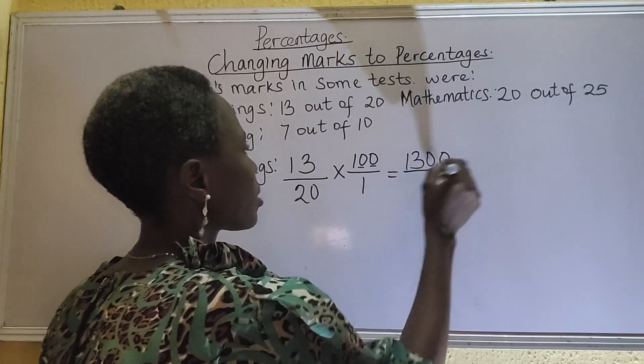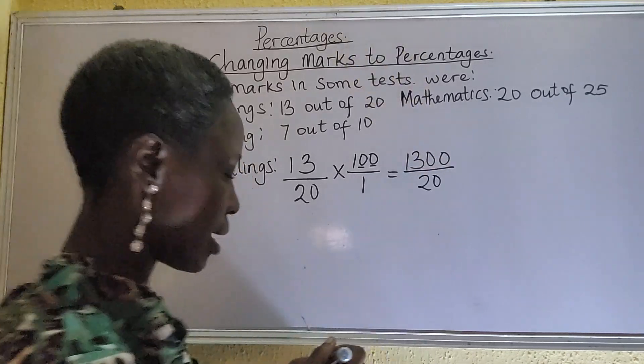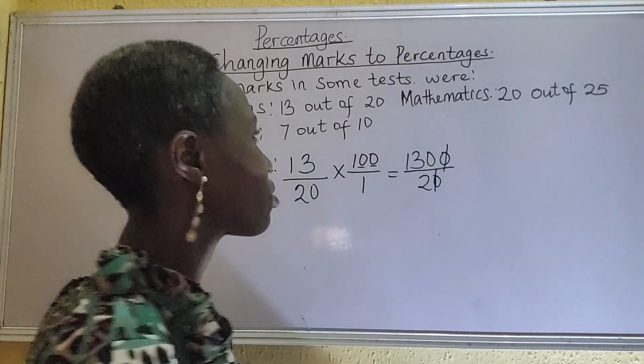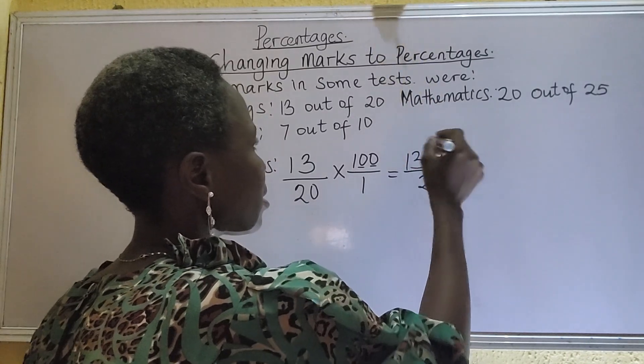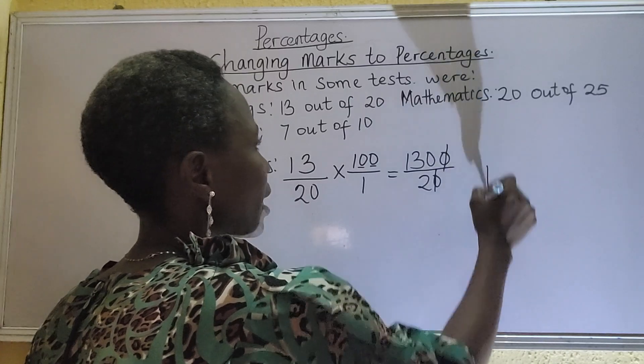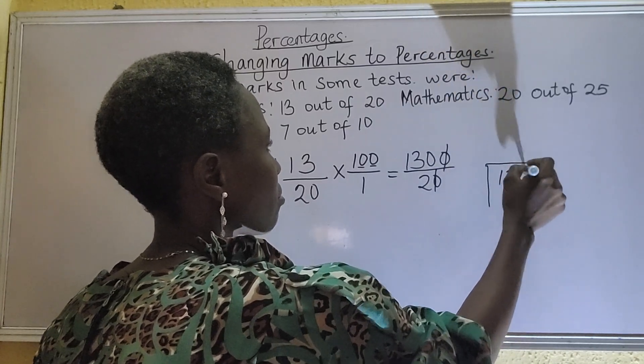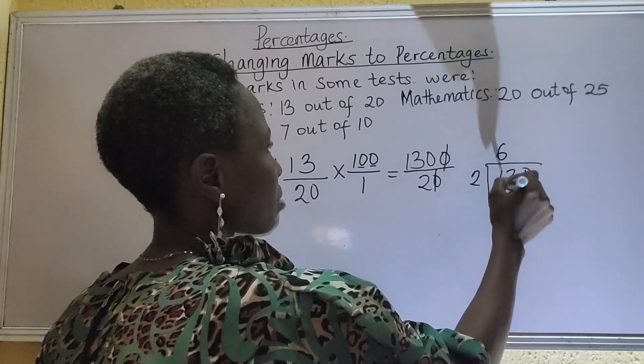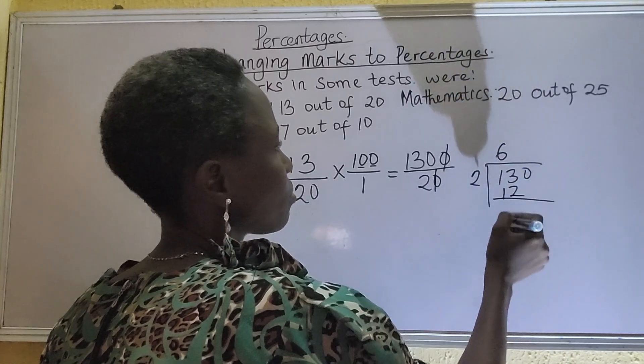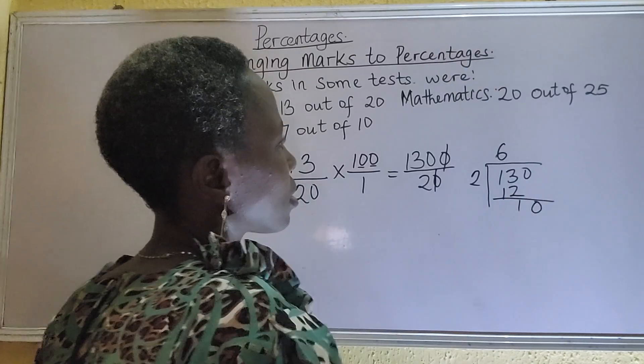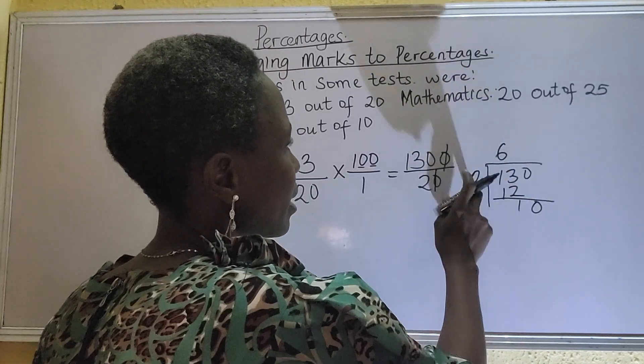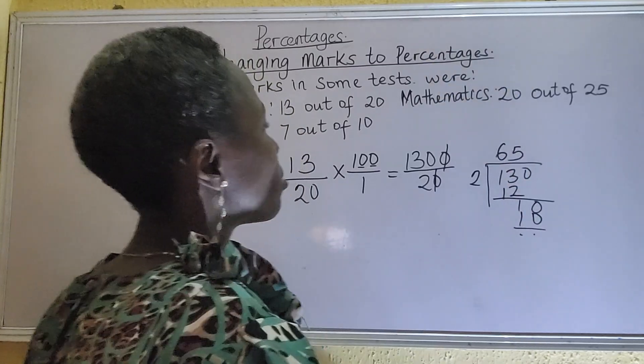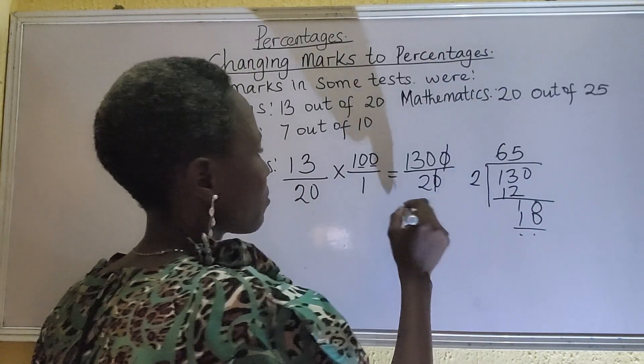So 20 times 1, that's 20. At this stage, we can cancel. Zero can actually take zero out. We are left at 130 divided by 2. We can have it this way. So 13 divided by 2, that's 6. 2 times 6 is 12. We subtract. 10 divided by 2, that's 5. 2 times 5 is 10. So we have this as our final answer, 65%.